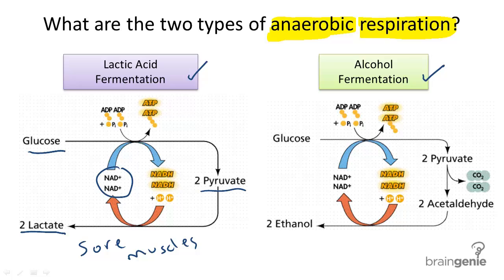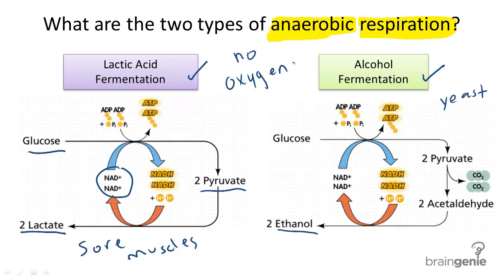Lactic acid is not the only waste product of fermentation, however. There is one more type of fermentation, and this one produces ethanol, a type of alcohol, as its waste product. This process occurs mostly in yeast cells and in the absence of oxygen — so let's remember: no oxygen available, this is anaerobic.